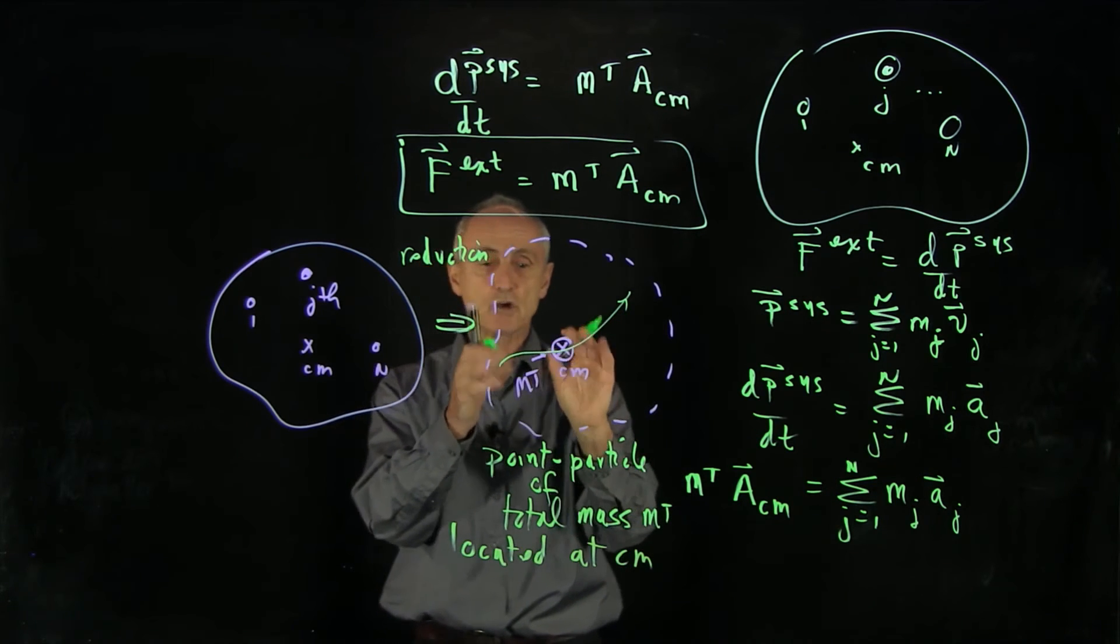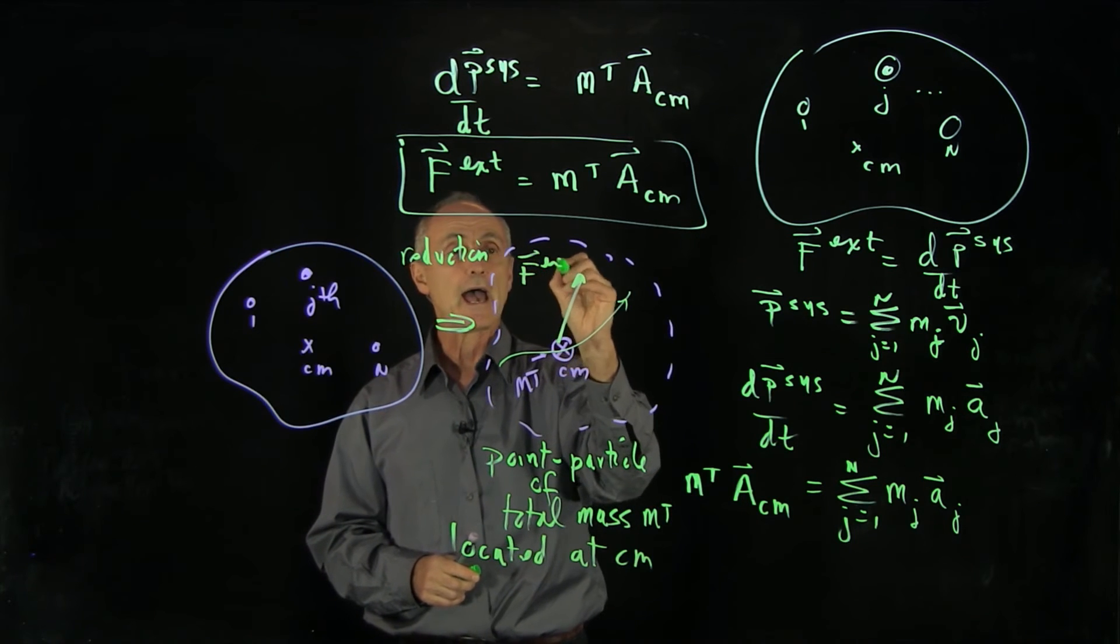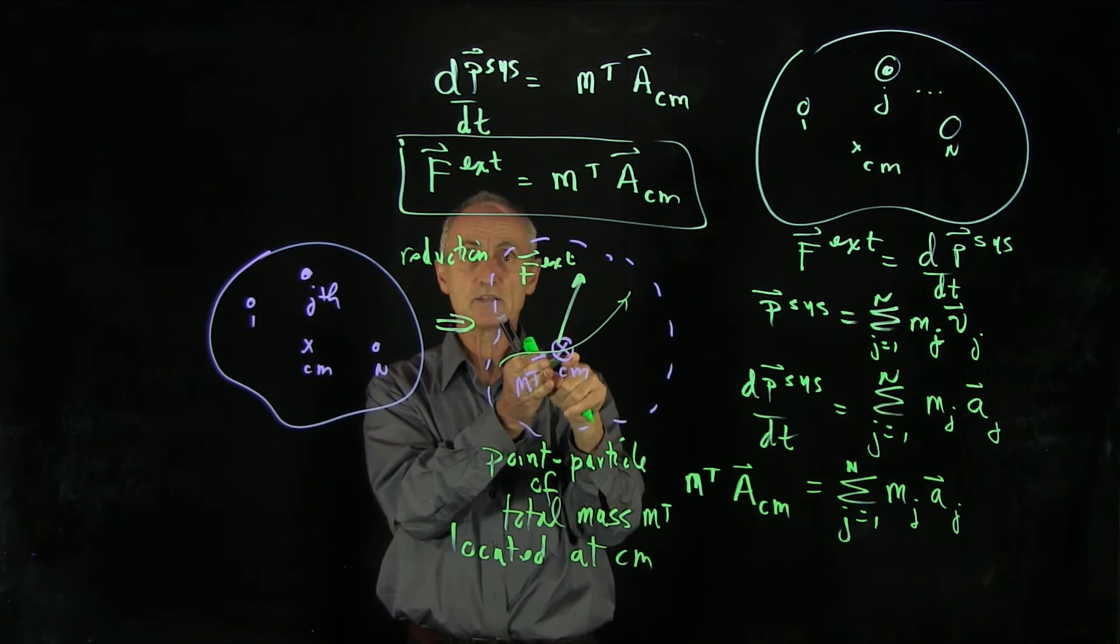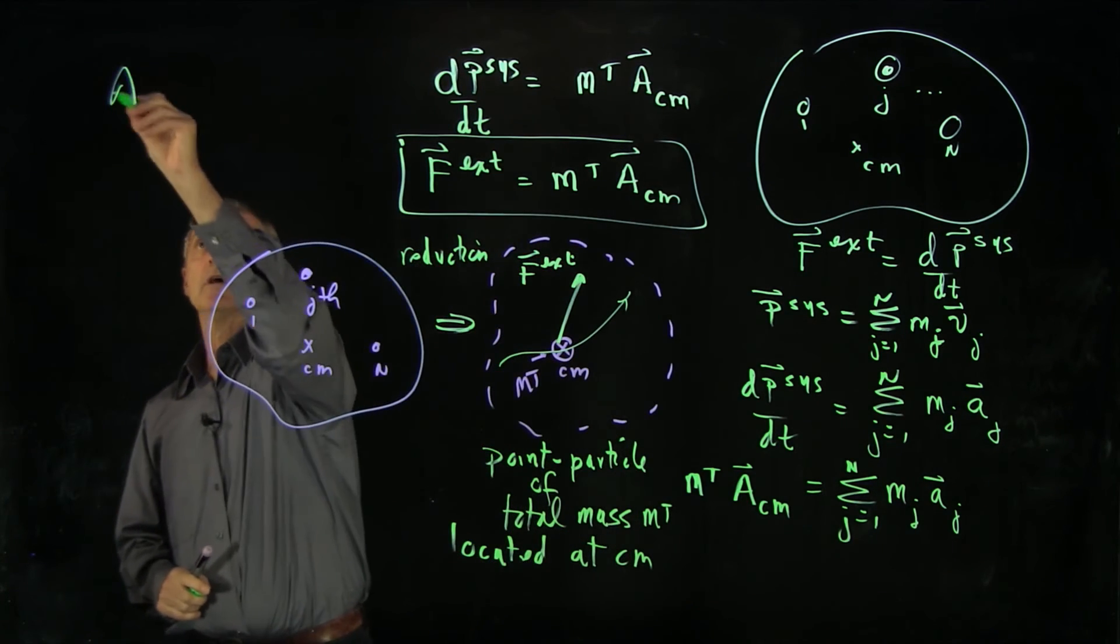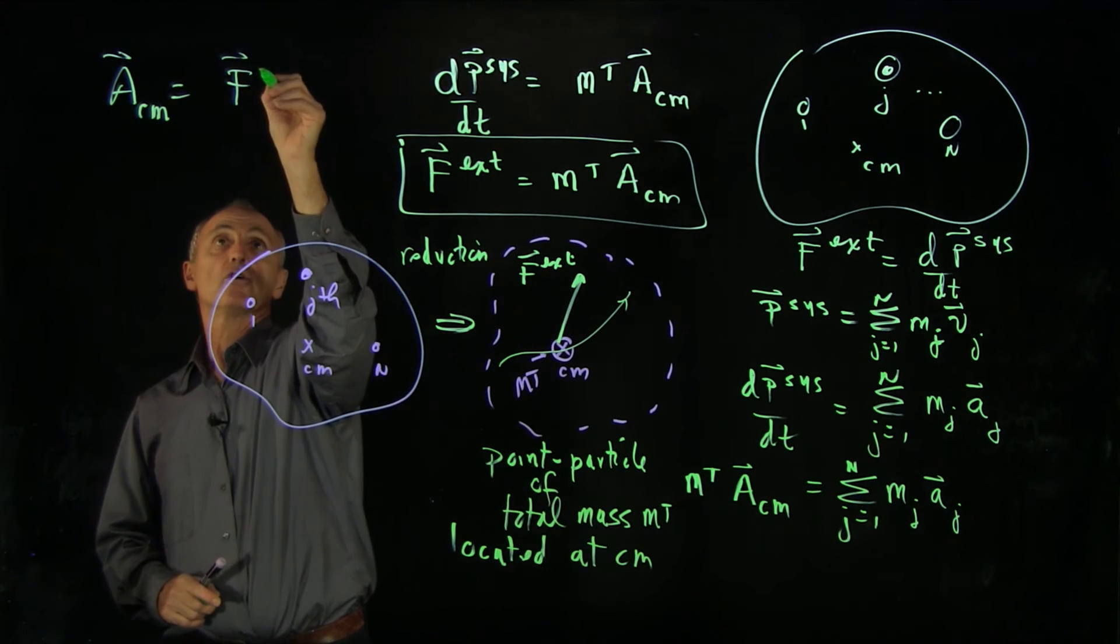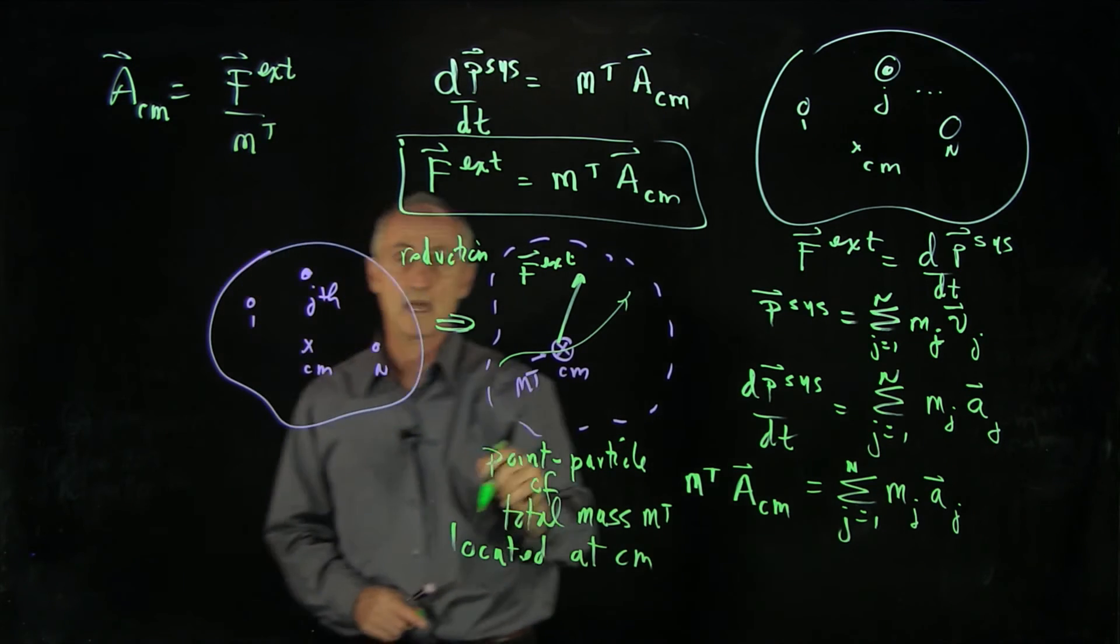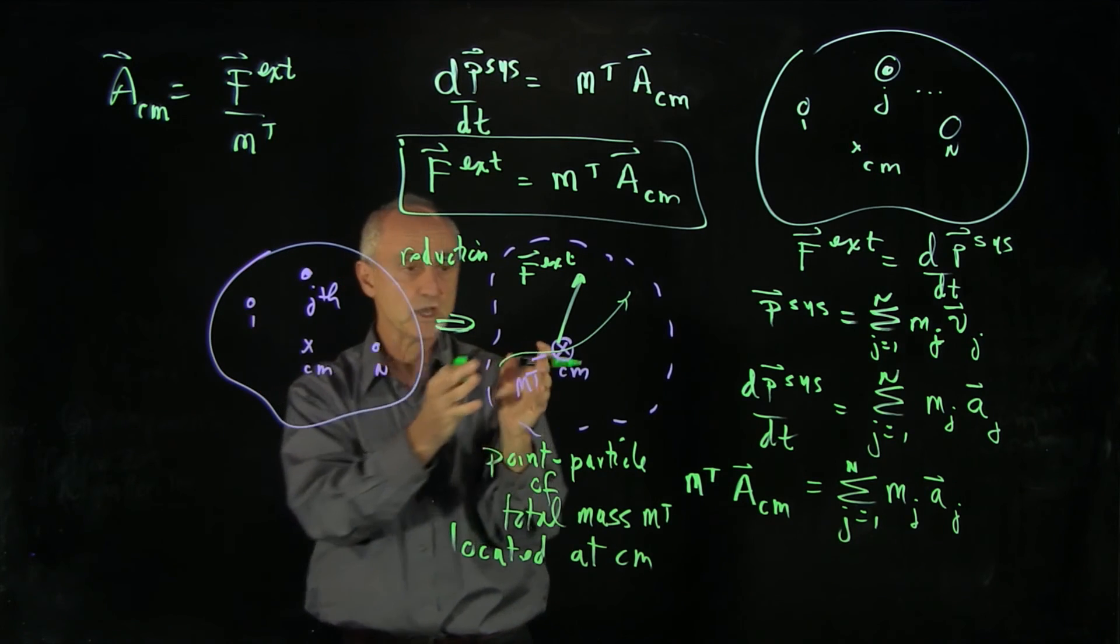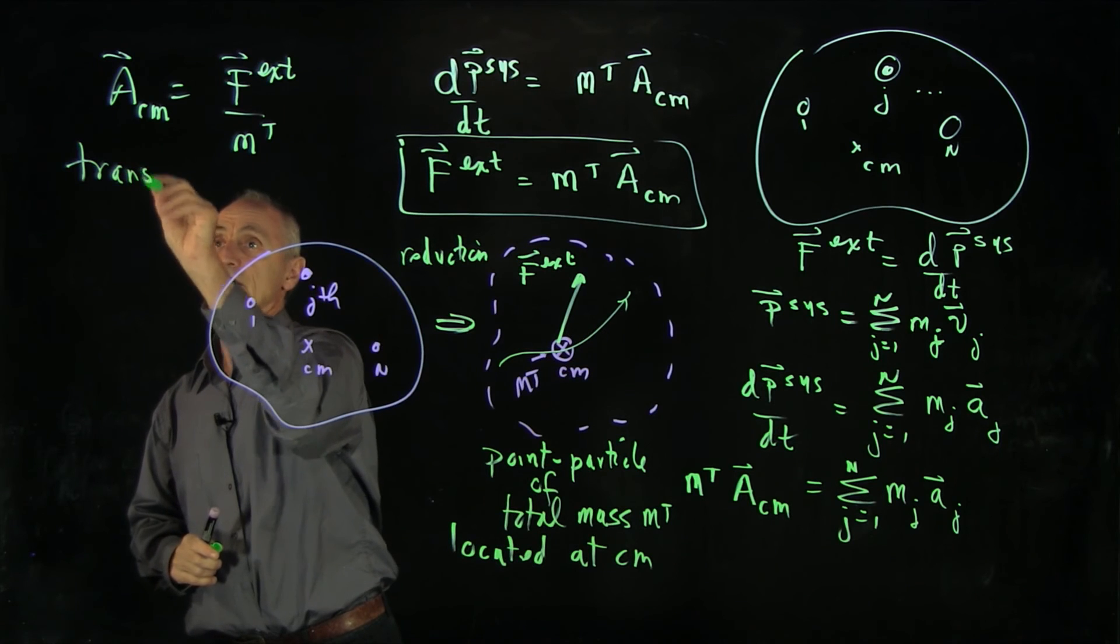And the dynamics of that total particle is if there is an external force acting on this system, we place this external force at the center of mass. And now we can calculate the acceleration of the center of mass is just that external force divided by the total mass. And that's how we can reduce this complicated system of particles to a translational motion of the center of mass.